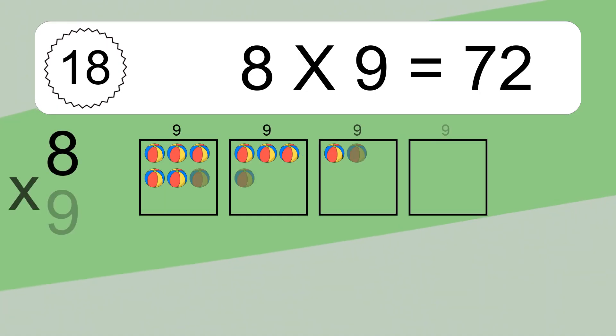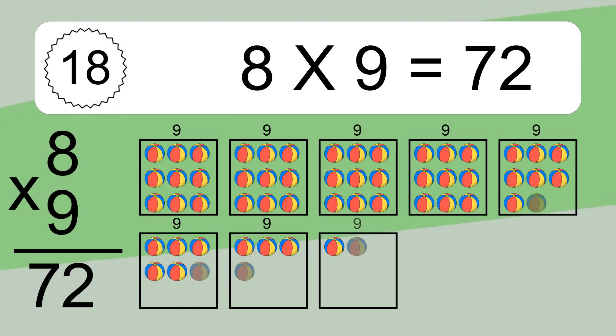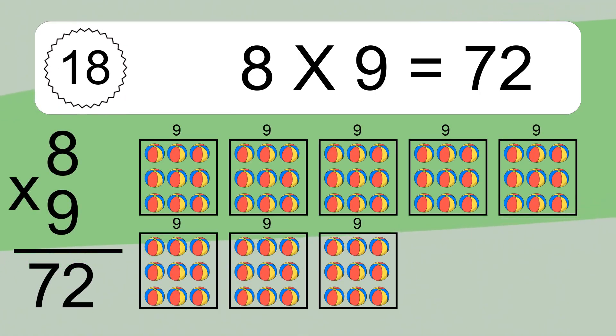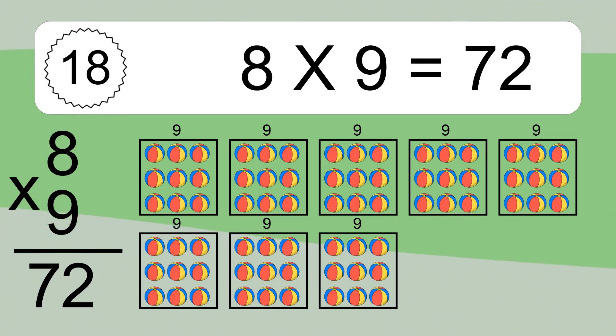8 times 9 equals what? 8 times 9 equals 72.